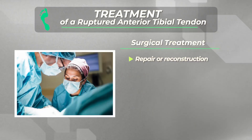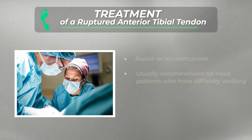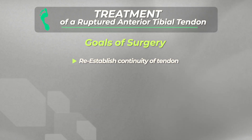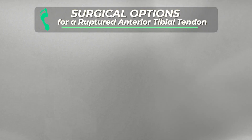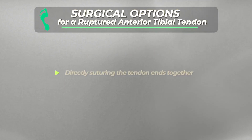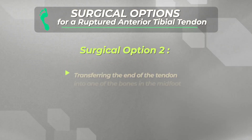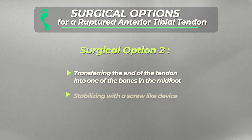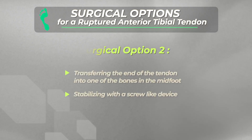This condition can be treated conservatively in patients who are not good candidates for surgery. However, a surgical repair or reconstruction of the tendon is usually recommended for most patients who have a strength deficit that leads to difficulty walking. The goal of this surgery is to re-establish the continuity of the anterior tibial tendon so the muscle-tendon unit can continue to function normally. If the tear is fairly clean and not retracted extensively, suturing the tendon ends together may be possible. More commonly, the rupture has occurred in an area of already degenerative tendon; in this situation, transferring the proximal end of the tendon into one of the bones of the midfoot and stabilizing it with a tenodesis screw will create a predictable repair.